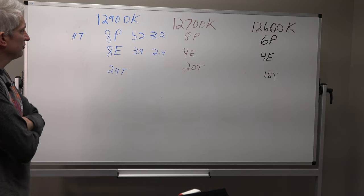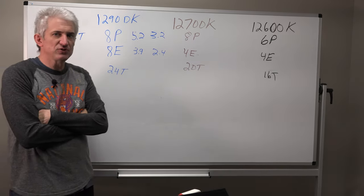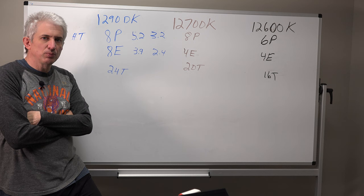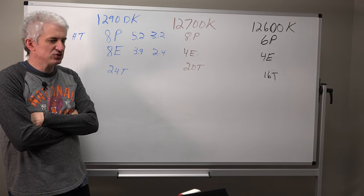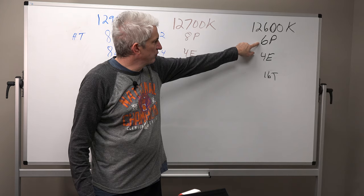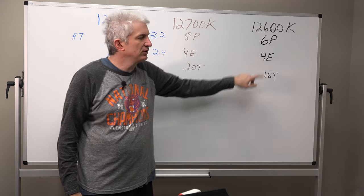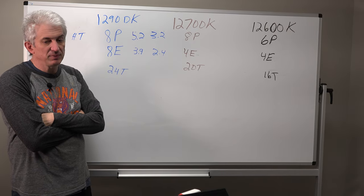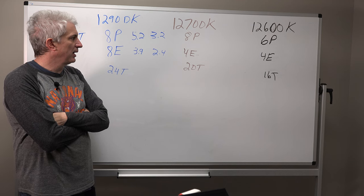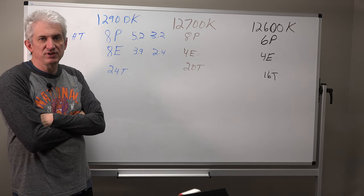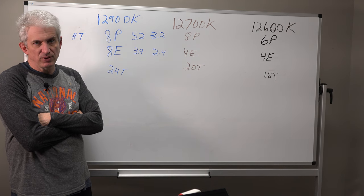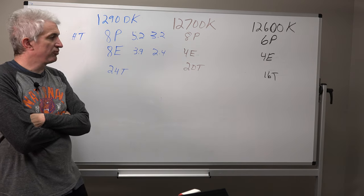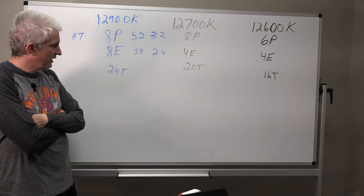So there is the Intel 12th gen as it currently sits. Now they're also going to come out with a 12400, which you'll probably see in our mainstream system. That's going to have six performance cores and zero E cores. And that is going to probably perform very well in gaming. Probably will have a fall off in productivity type tasks like video editing and 3D rendering and modeling and desktop publishing. But in gaming, a 12400 is probably going to perform very nicely.